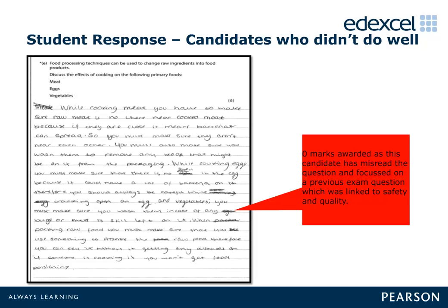In these cases the answers were a pleasure to read, and this is clearly an area of the specification that offered real scope for stretch and challenge of the most able candidates. This question was also left blank by several weaker candidates. Others that gained zero marks did so by just writing out the question without making any valid points. As with question 13e, the full range of marks was given. Weaker candidates got three marks or so for making different valid points with little discussion. Handwriting was again a major problem. Regrettably, no marks can be awarded where a candidate has misread the question and focused on a previous exam question linked to safety and quality.